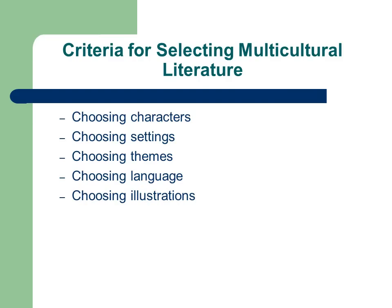Criteria for selecting multicultural literature include choosing characters, choosing settings, choosing themes, choosing language, and choosing illustrations.